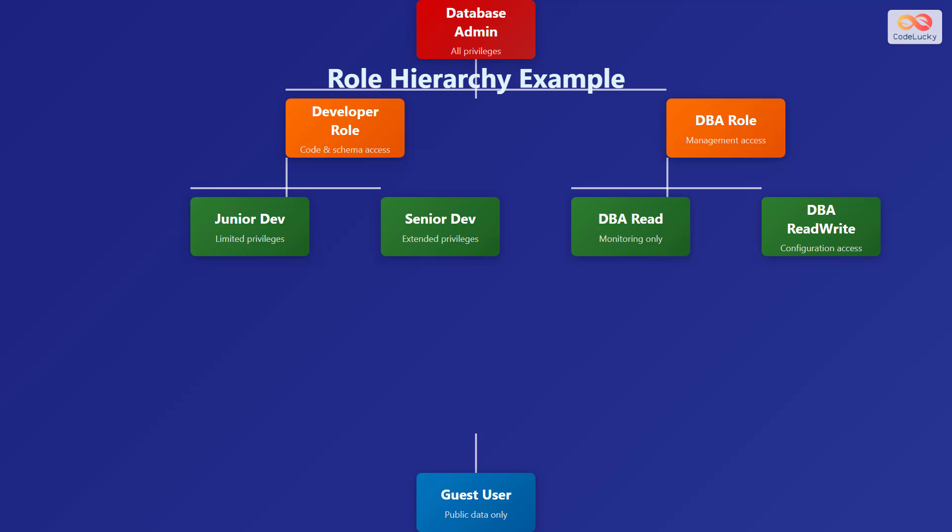Here is an example of role hierarchy in a company. At the top is the database admin with all privileges. At the mid-level are the developer role and DBA role. The developer role contains junior dev and senior dev, having limited and extended privileges respectively. The DBA role contains DBA read-only and DBA read-write, having monitoring and configuration access respectively. At the bottom is a guest user with public data access only.